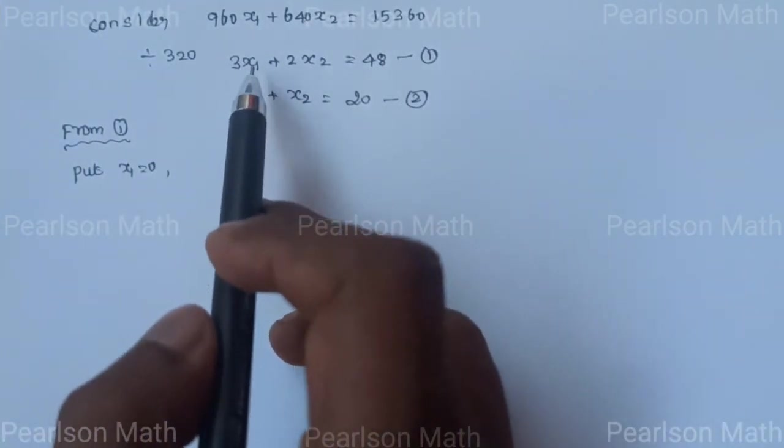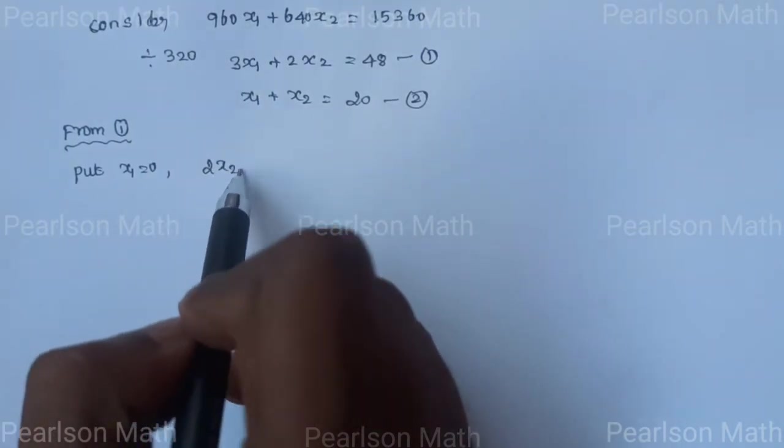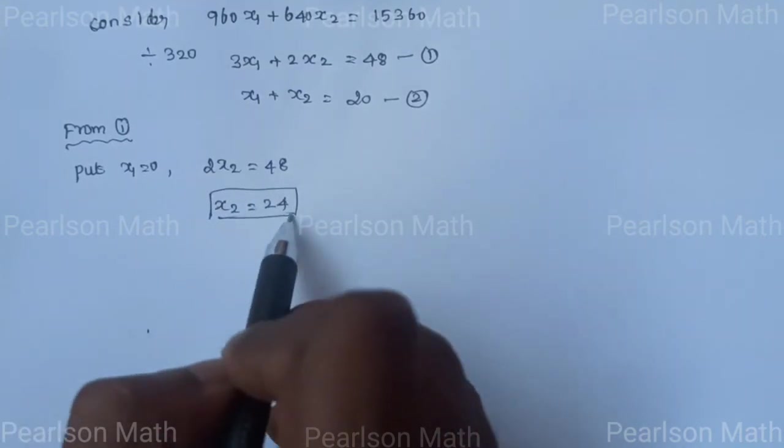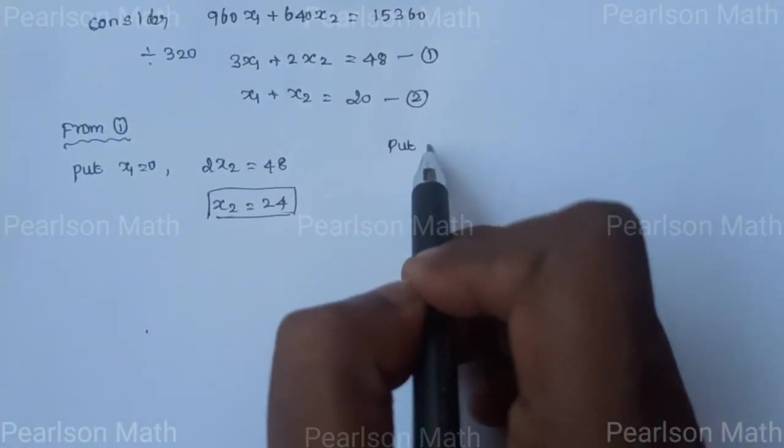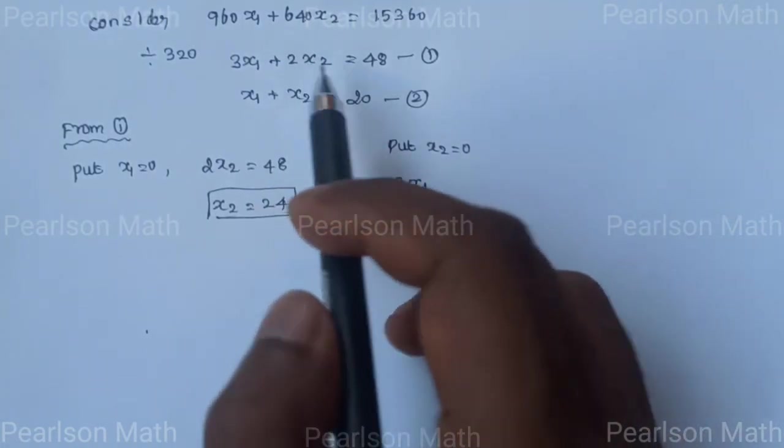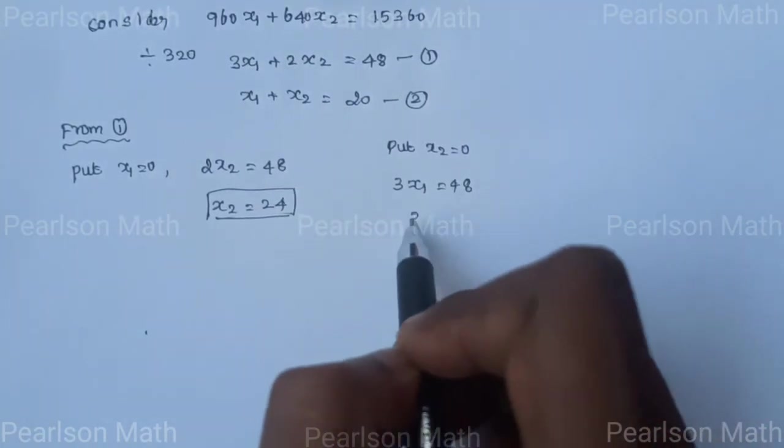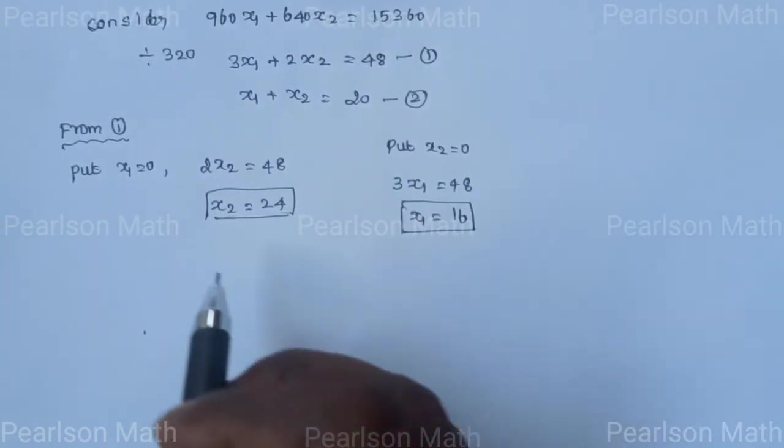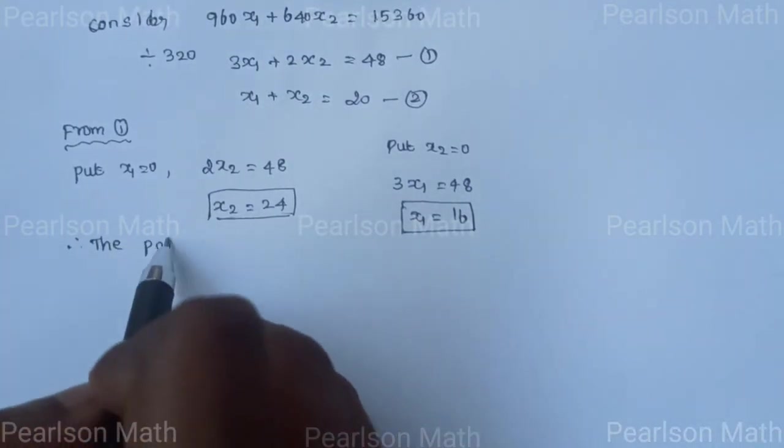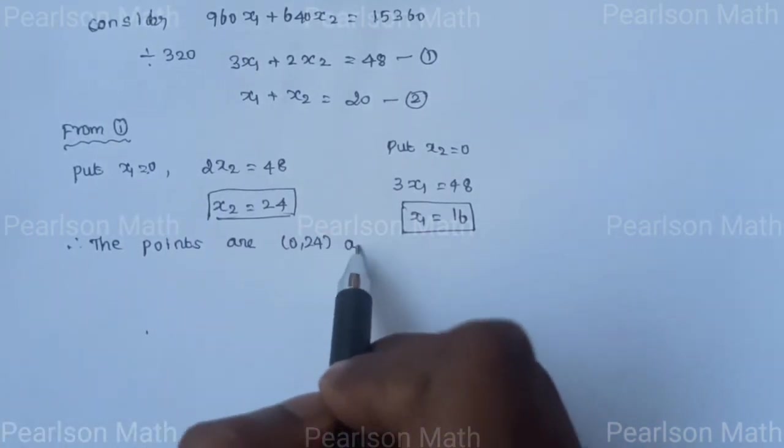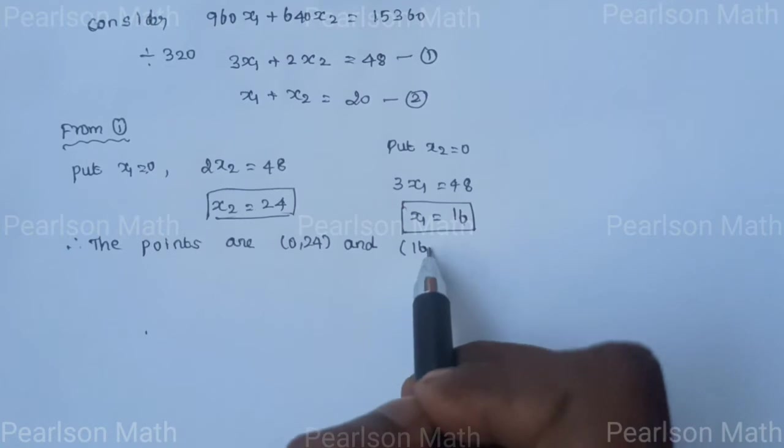Consider the equations. First equation: 960x₁ plus 640x₂ equals 15,360. Put x₁ equals 0, then 640x₂ equals 15,360, so x₂ equals 24. Put x₂ equals 0, then 960x₁ equals 15,360, so x₁ equals 16. Therefore, the points are (0, 24) and (16, 0).